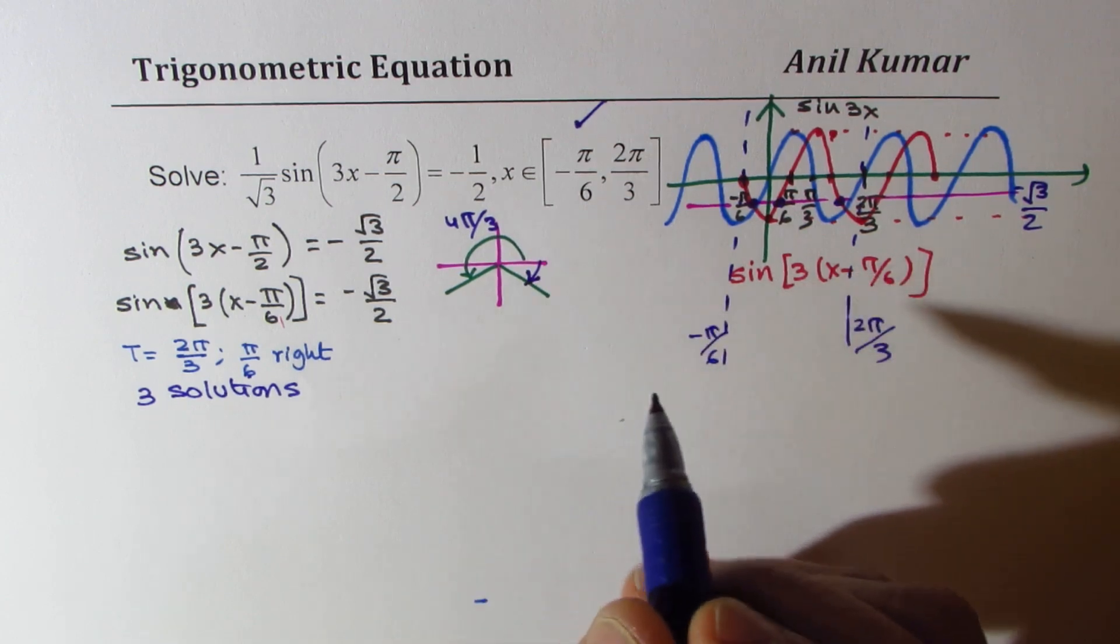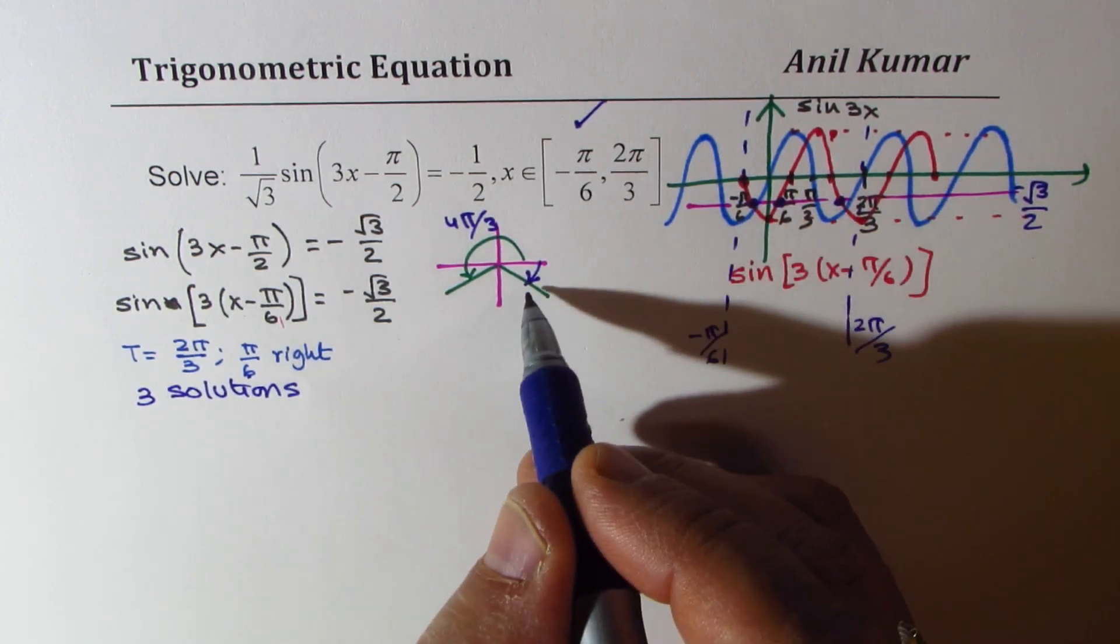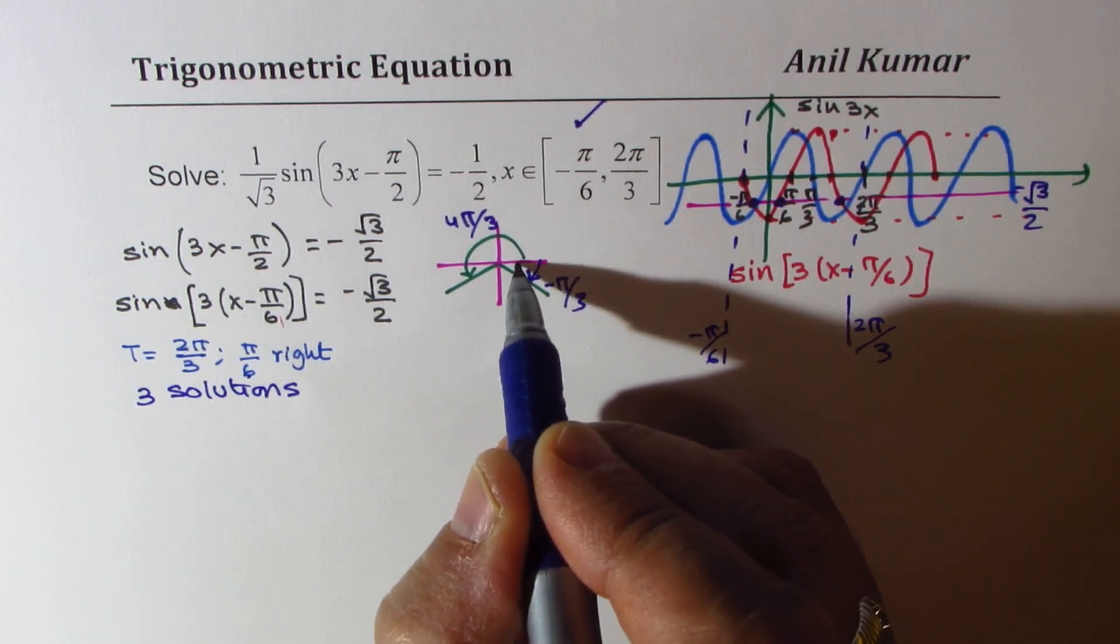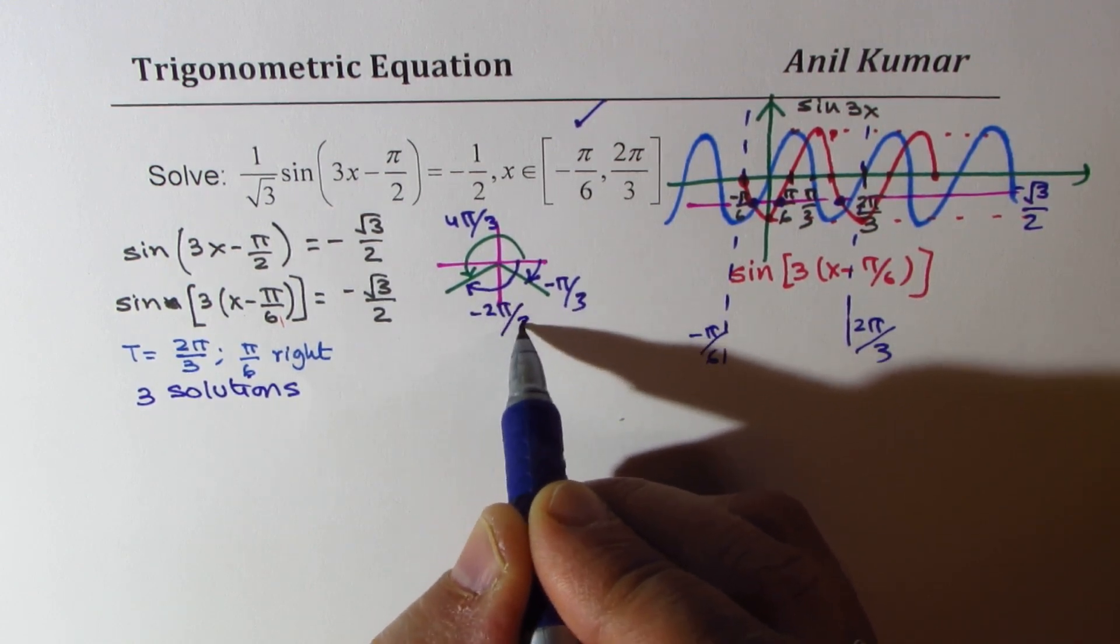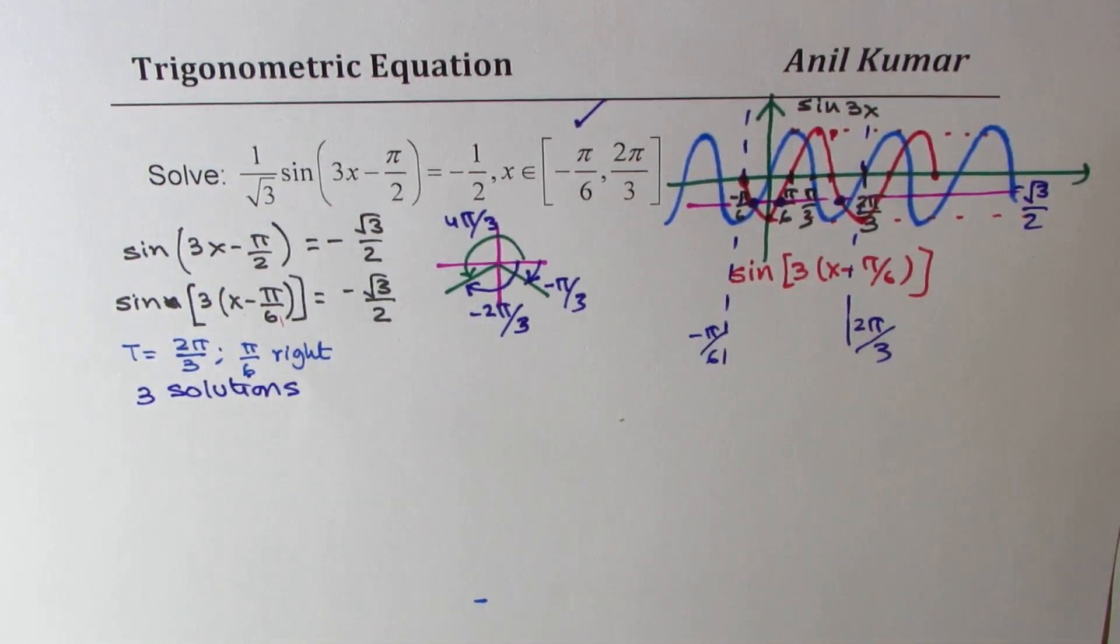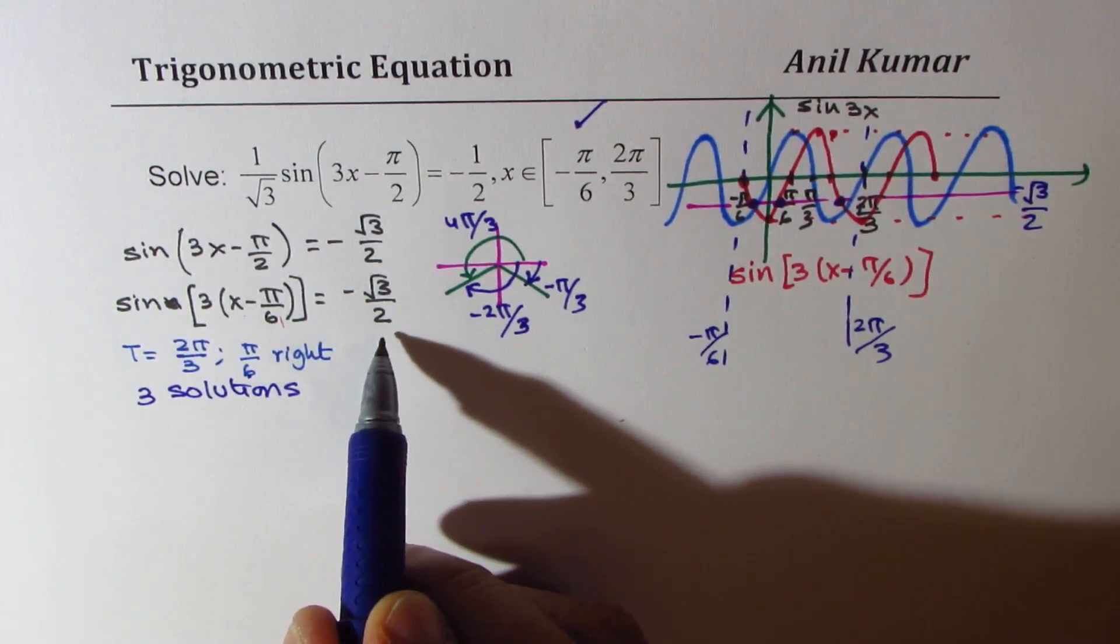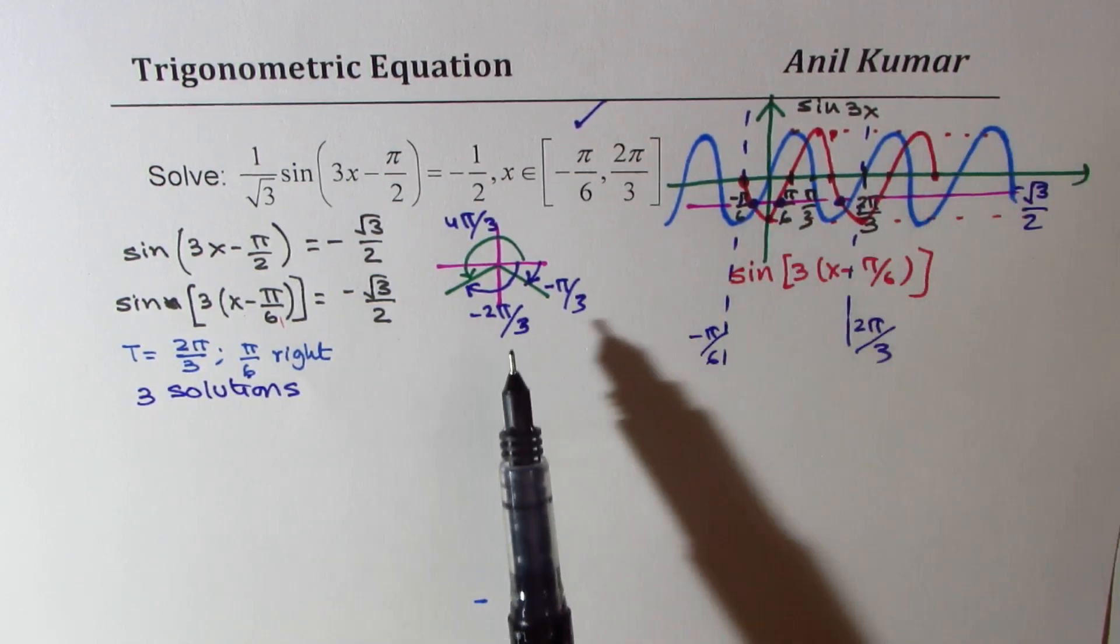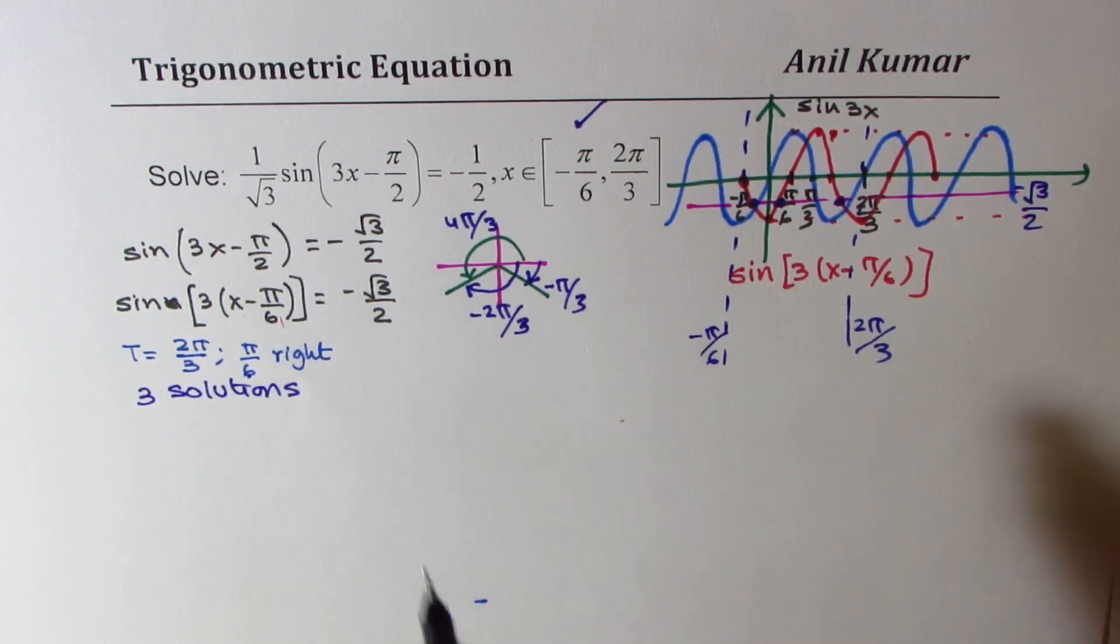This is for sine of what value will be minus square root 3 by 2. It is 4 pi by 3. And since the interval is given like this, we will look into the other two values as the ones on the left side. That is how you could solve it.